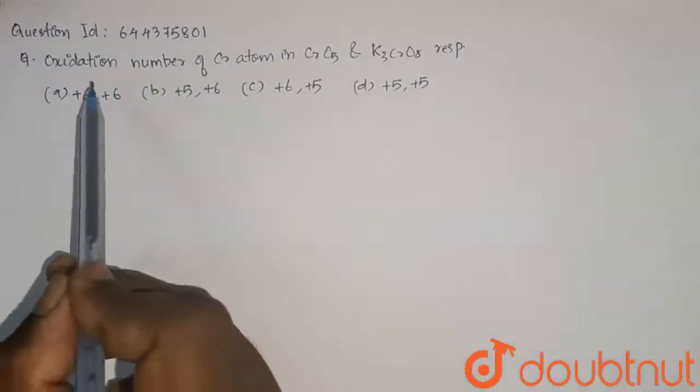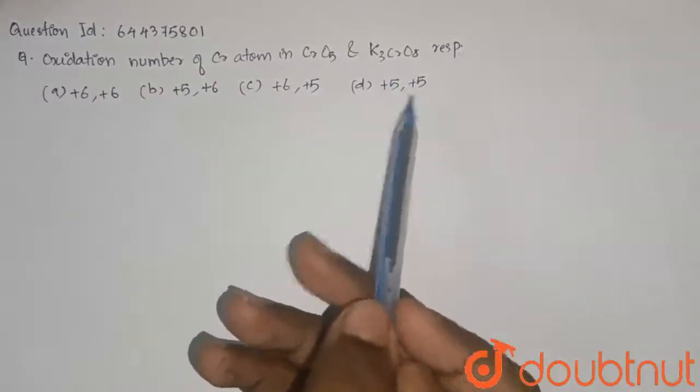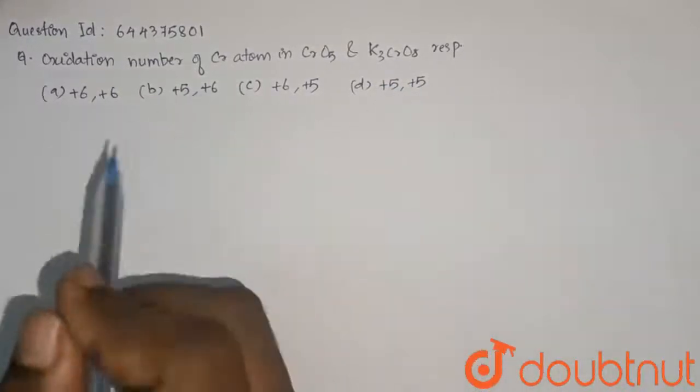The question here is to find the oxidation number of chromium in CrO5 and K3CrO8 respectively. We have given four options. So let us find out.